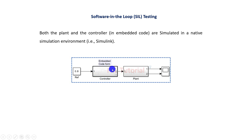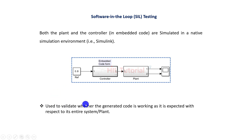As you can understand from this picture, the controller is now in the form of embedded code. The plant remains as it was. Now you will test the performance of the generated code with respect to the plant. This type of testing is generally known as Software-in-the-Loop testing. Why do we do this testing? The answer is to validate whether the generated code is working as expected with respect to the entire plant or system.